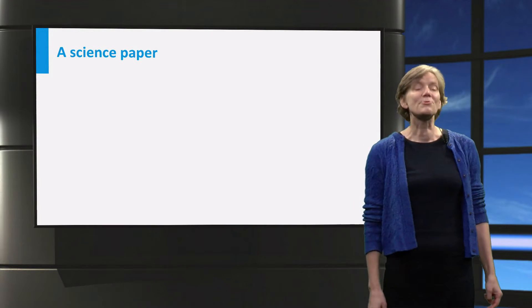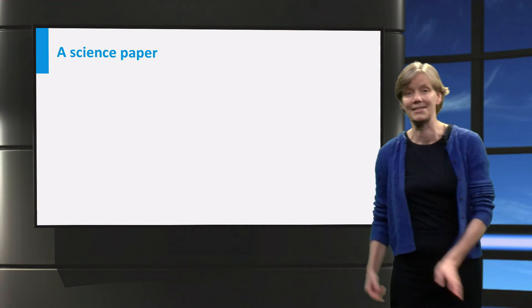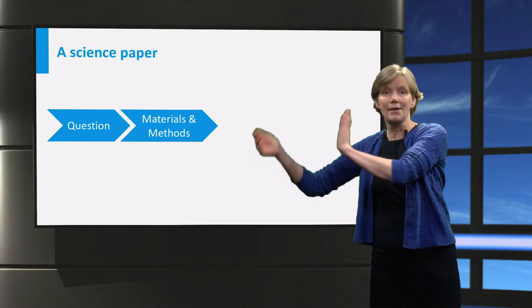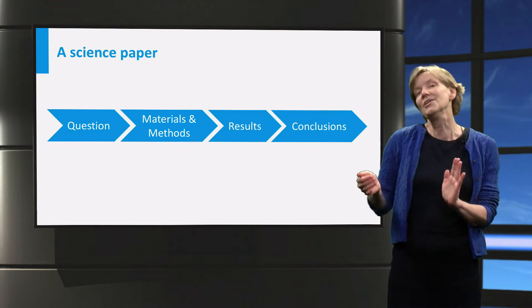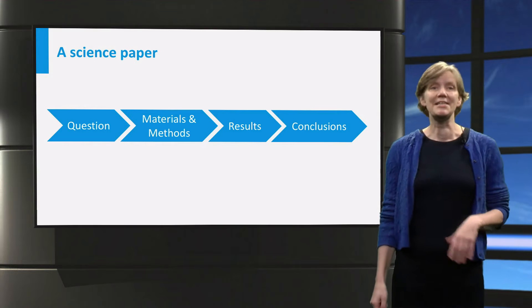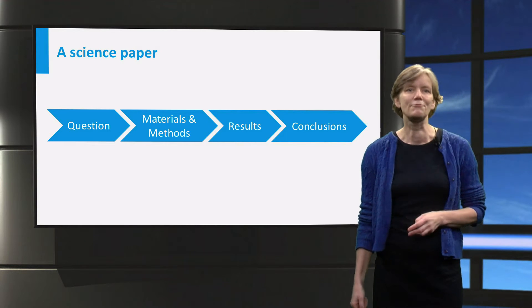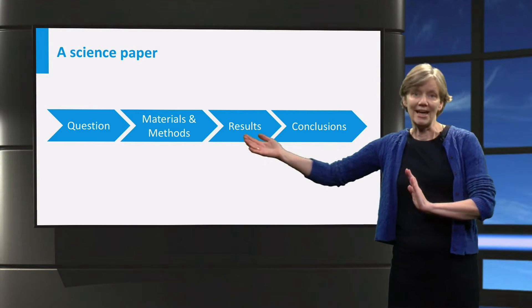In scientific papers, research is often presented as question, materials or methods, and then results and conclusions. So a research paper might seem to be a linear process from the question to the answer in one go.